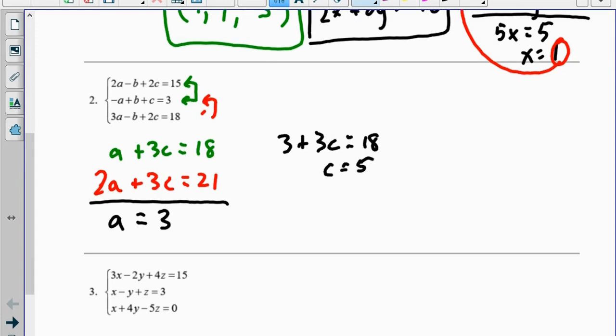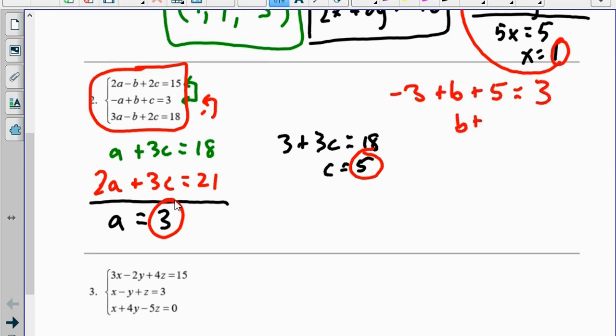Then I can take both a and c, and substitute them into one of the original equations, so then I can get b. I'm probably going to pick the middle one because b is all by itself, and it's positive, and a and c both have coefficients of either 1 or negative 1. So that's negative 3 plus b plus 5 equals 3. That's the same thing as b plus 2 equals 3, so b equals 1.